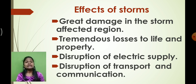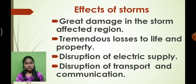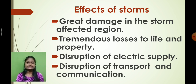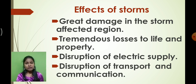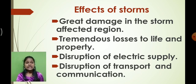The effects of storm include great damage in the storm-affected region. Big trees fall down and houses collapse. Storms can cause maximum damage to property and the overall region where they occur. They also cause disruption of electricity supply, as electricity towers get destroyed, leaving people without power. Additionally, storms disrupt transport and communication due to network issues and road blockages.